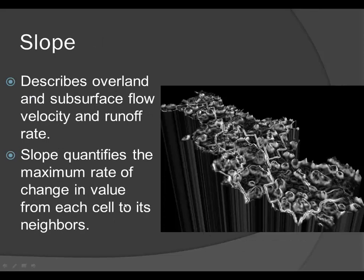The second primary attribute is slope — how steep the hill is. Slope has a direct correlation with water as it moves downhill. Understanding slope helps us understand how rapidly water moves, and the velocity and runoff rate can be calculated from slope. It's a simple raster calculation deriving a surface from the DEM, just like aspect. Slope can be expressed as percent or in degrees, describing the rise over run.